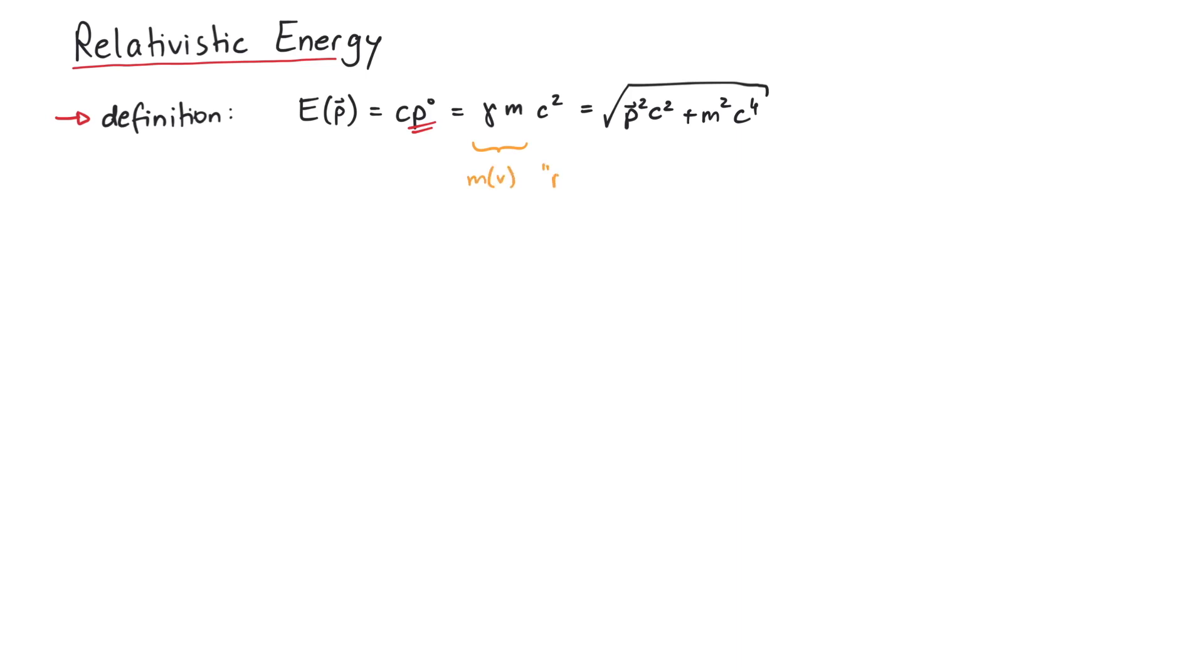As a side note, if you define a relativistic mass as gamma times m, then the energy is given by Einstein's famous E equals mc2. However, such a velocity-dependent relativistic mass is not really used nowadays. Instead we just use m and always mean the Lorentz-invariant rest mass.